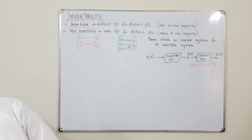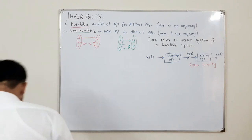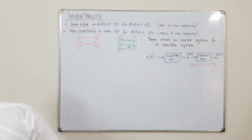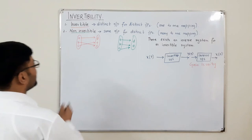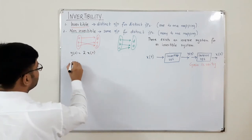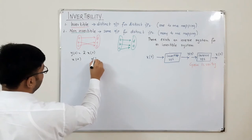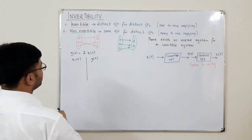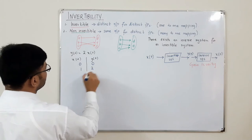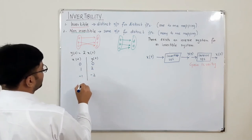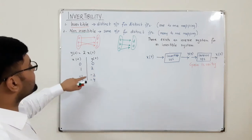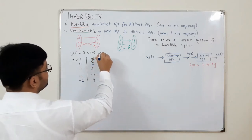Let's look at some examples. The book gives the invertible system y(t) = 2·x(t). You make a table: for x(t) = 0, y(t) = 0; for x(t) = 1, y(t) = 2; for x(t) = -1, y(t) = -2; for x(t) = -2, y(t) = -4. For distinct values of inputs we have distinct values of output, so this is an invertible system.